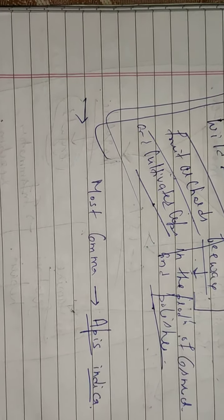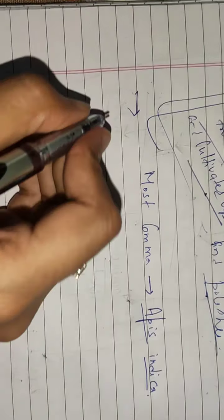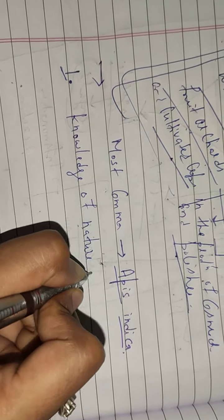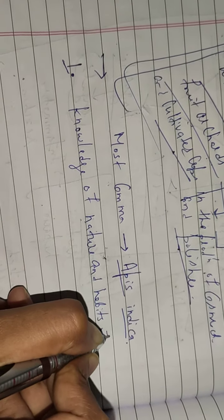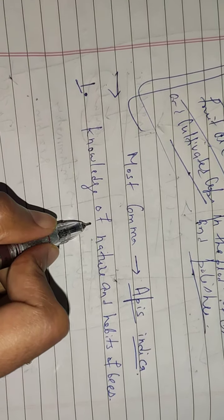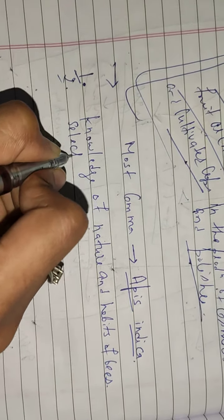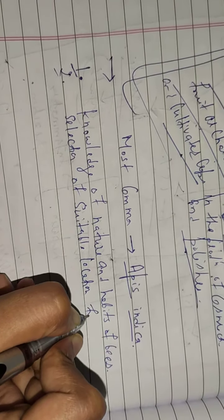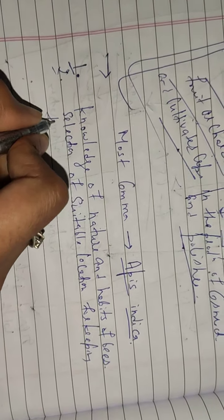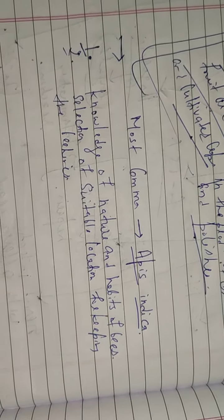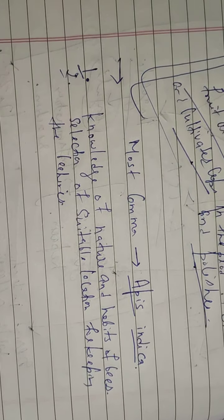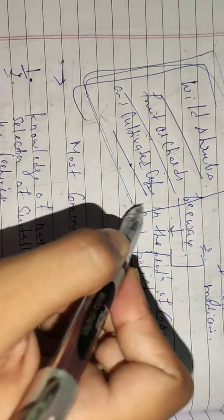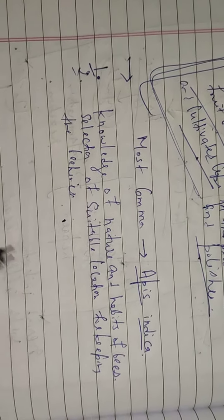Following points are important for beekeeping. First one is knowledge of nature and habits of bees. Every species has different habits and different nature. Second point is selection of suitable location for keeping the bee hives. The bee hives can be in your house, but suitable conditions should be available.